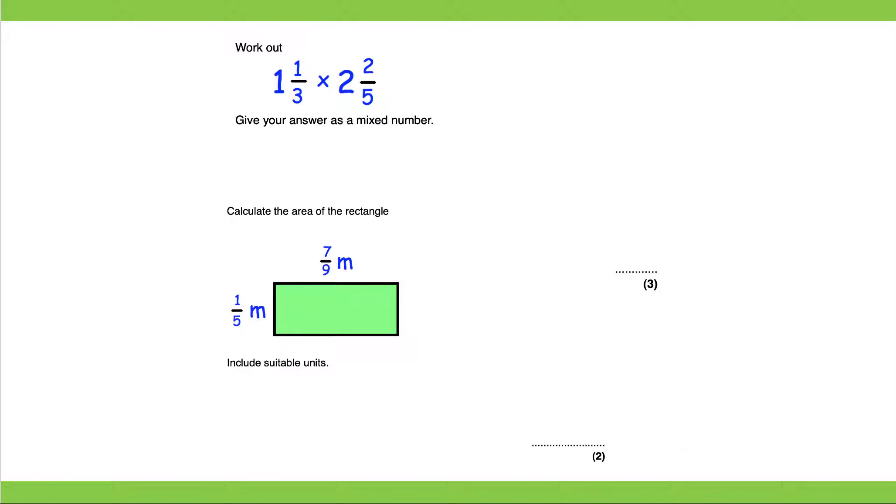Next question. Work out 1 and one third multiplied by 2 and two fifths and give your answer as a mixed number. So we can do 1 multiplied by 2 which would give us 2 and one third multiplied by two fifths which would give us two fifteenths. Combining them together it would give us 2 and two fifteenths which would be our answer.